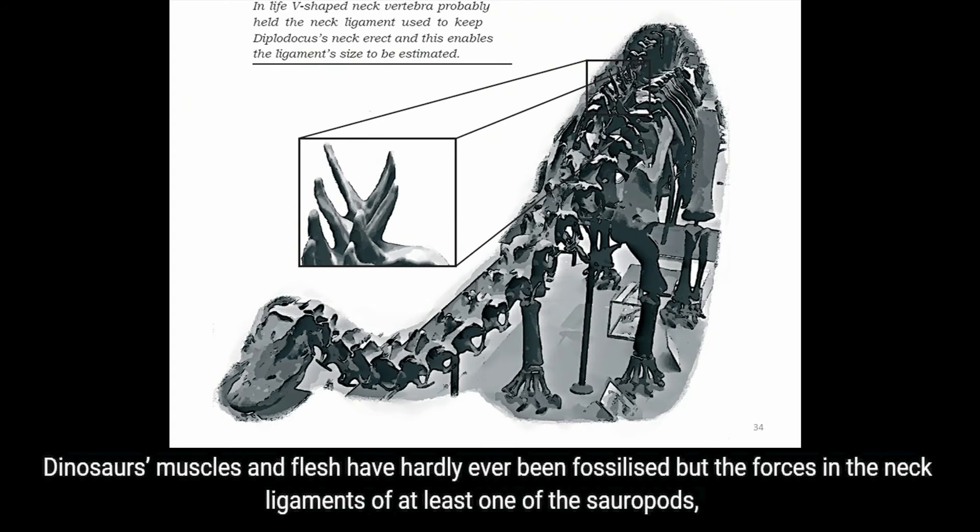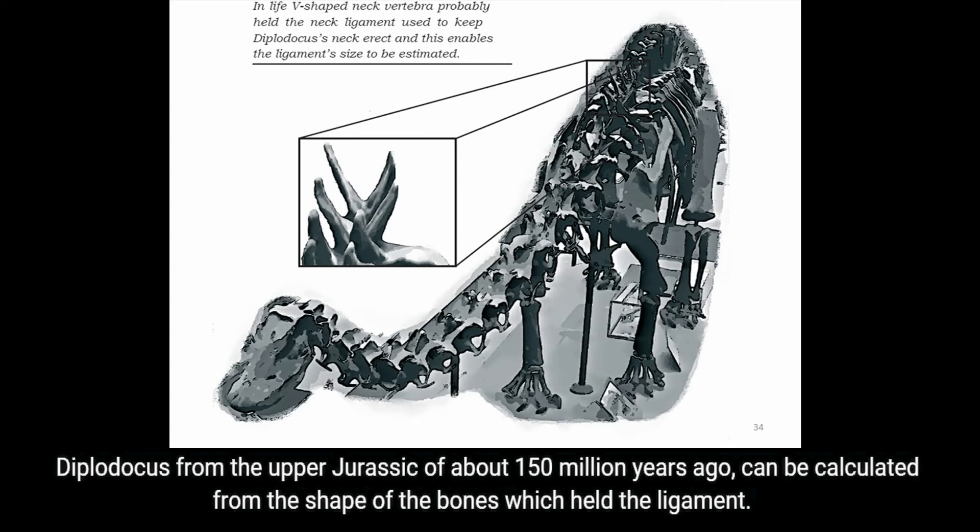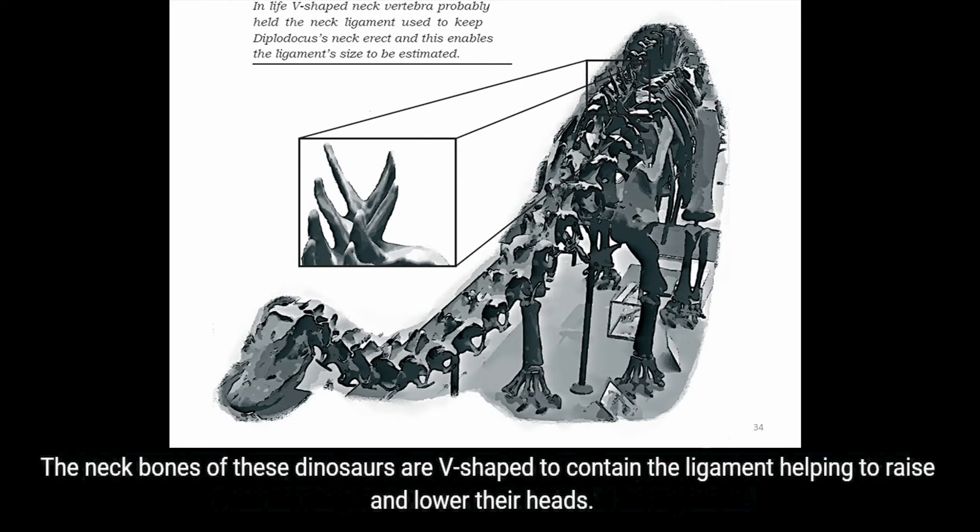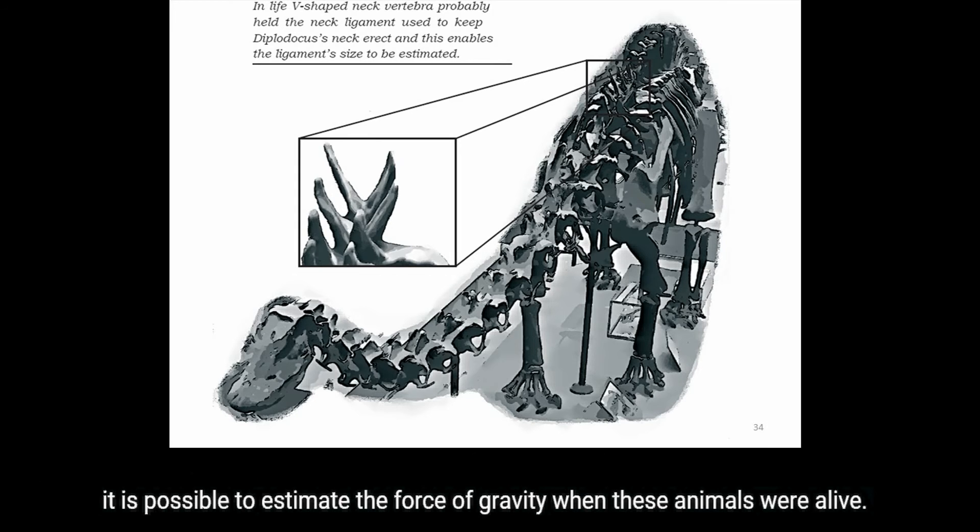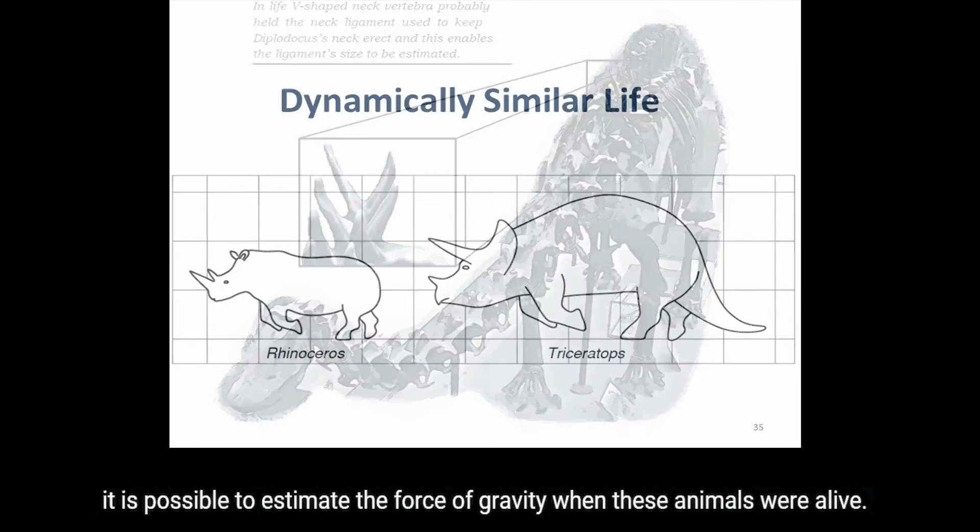Dinosaurs' muscles and flesh have hardly ever been fossilized, but the forces in the neck ligaments of at least one of the sauropods, Diplodocus, from the upper Jurassic of about 150 million years ago, can be calculated from the shape of the bones which held the ligament. The neck bones of these dinosaurs are V-shaped to contain a ligament helping to raise and lower their heads. By calculating the force that this neck ligament was likely to exert and by estimating the volume of the neck and head, it is possible to estimate the force of gravity when these animals were alive.